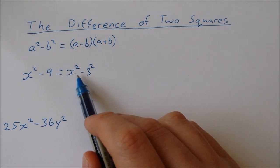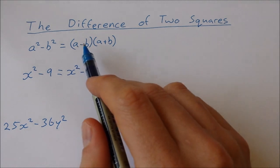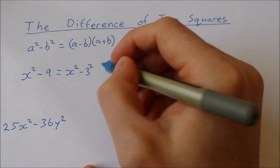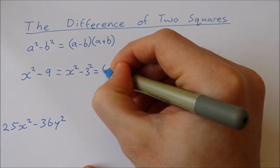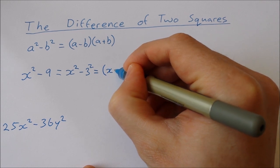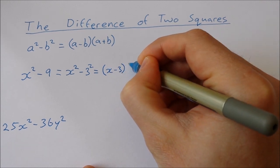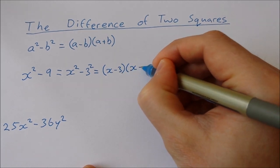So we have x squared minus 3 squared, we can write that in this form here. So that's going to be equal to x minus 3 times x plus 3.